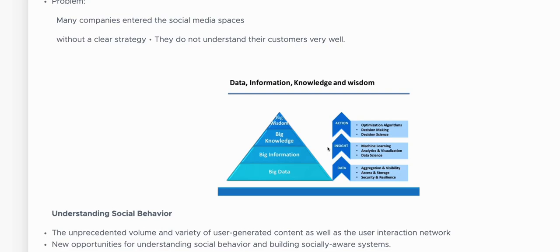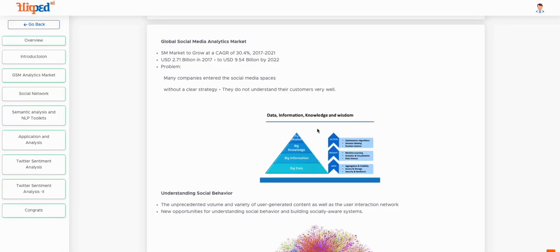The last and smallest part of the pyramid is the implementability part. Out of 100 inferences gathered, what are the 10 inferences which we can actually act on or implement in the real world? This is where global social media analytics come into play, and it is a huge market. Twenty years ago, nobody would have believed that social media could play a very important part in developing economic policies, government laws, and shaping everyone's life around the world.